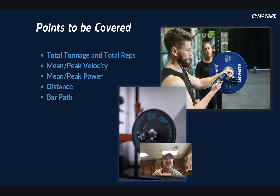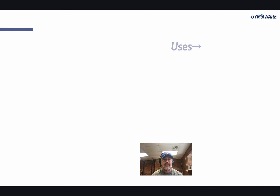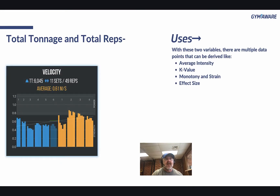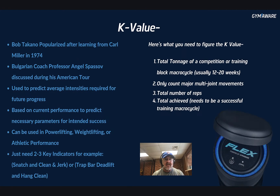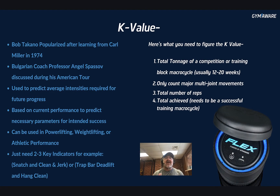You won't believe how much is in those five points. First, total tonnage and total reps — these two variables have multiple data points that can be derived from them, like average intensity, k value, monotony, strain, effect size, and more. We're going to learn about the k value.